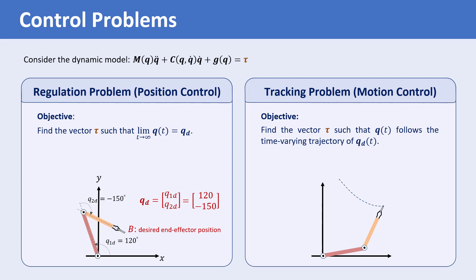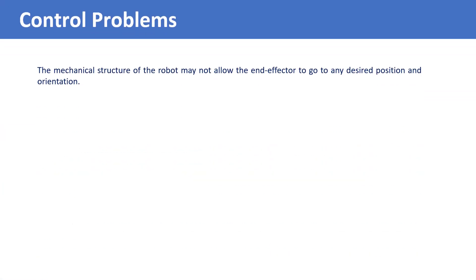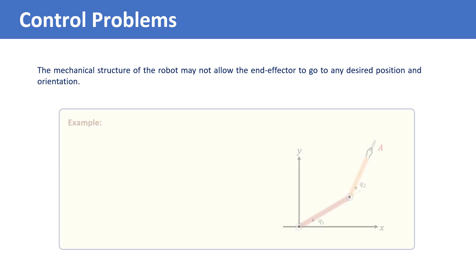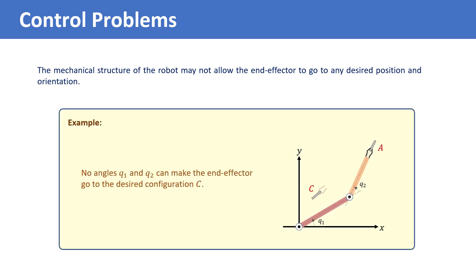It should be noted that the inverse kinematics may have no solutions. For example, the mechanical structure of the robot may not allow the end effector to go to any desired position or orientation. For instance, for a two degree of freedom robot, no joint angles Q1 and Q2 can make the end effector go to the desired configuration C.